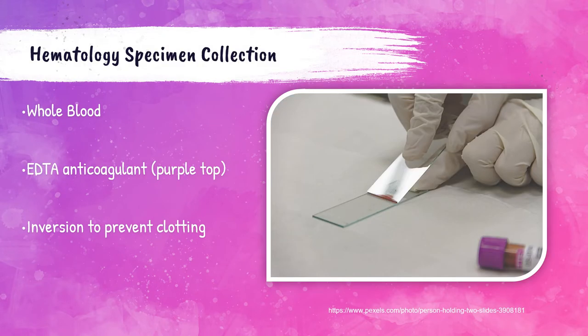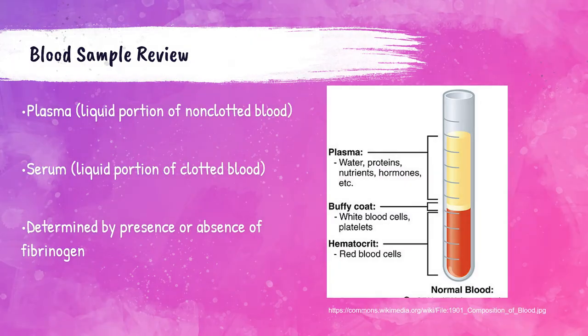The specimen required in hematology is whole blood anticoagulated with EDTA — this is the purple or lavender top tube. These tubes must be inverted gently eight times to prevent clotting, because even microclots in the tube will invalidate results and can clog the instrument, causing delays for other patient results.